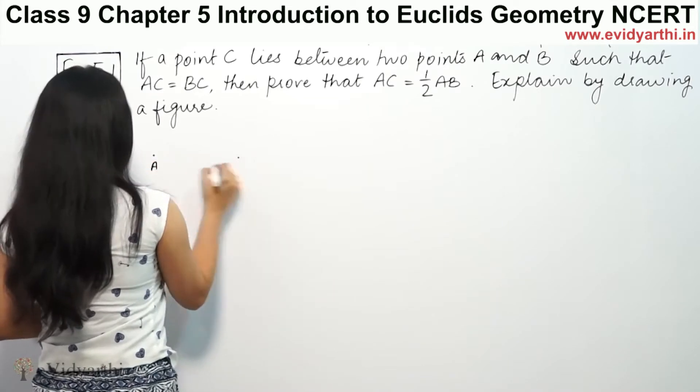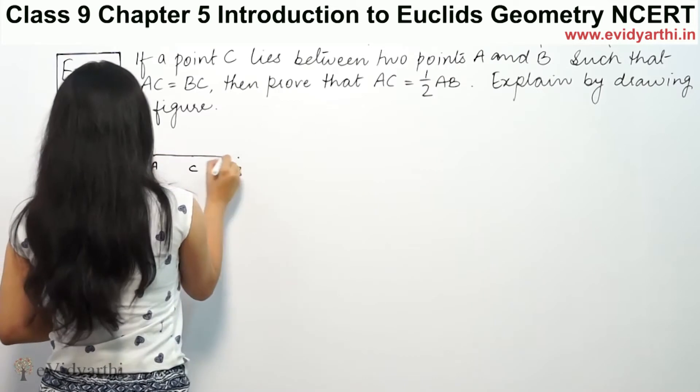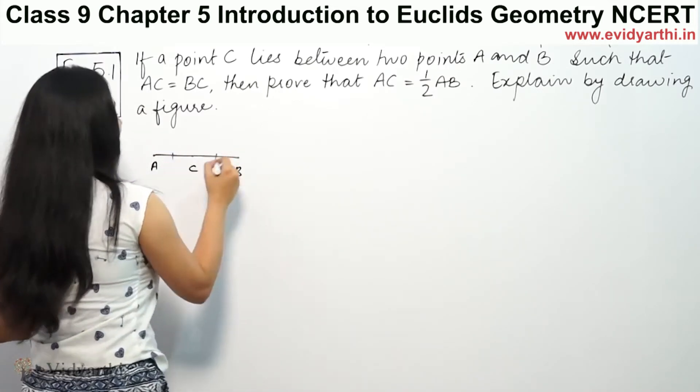Now we have two points, one is A and one is B. Let C be the point between them. We know that AC distance is equal to BC.